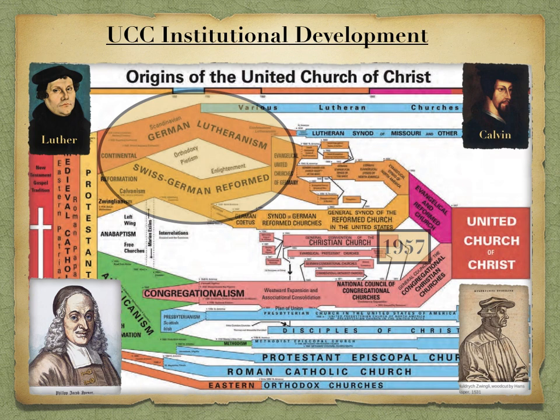Calvin coined TULIP: T stands for total depravity, U stands for unconditional election, L stood for limited atonement, I stood for irresistible grace, and P stood for the preservation of saints. He also studied in Basel, Switzerland. Philip Spener, the father of Pietism, emphasized personal transformation through spiritual rebirth and renewal, individual devotion and piety — emphasizing biblical doctrine with a reformed emphasis on individual piety and living a vigorous Christian life.